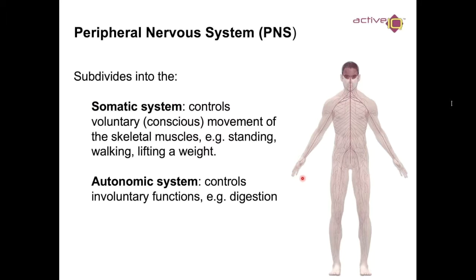An autonomic response works differently. For example, if you're getting nervous or having an argument, the body finds your heart rate increasing. The peripheral nervous system via the afferent nerve sends a signal to the central nervous system. The brain then sends a signal via the efferent nerve to the internal organs — specifically the adrenal glands — saying it needs to release adrenaline, increasing your fight-or-flight response.